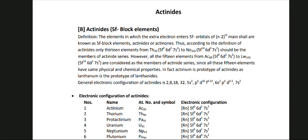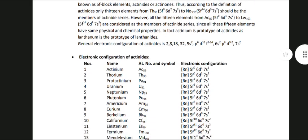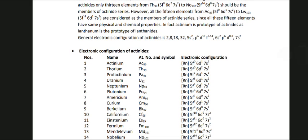Generally, the electronic configuration of actinides is 2-8-18-32, 5S2, P6, D10, F0-14, 6S2, P6, D0-1, 7S2.